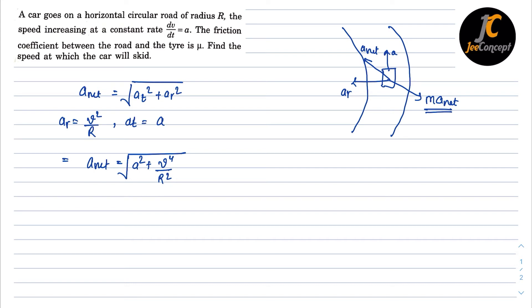Now the required friction to move this car along the circular path is m times a_net should be less than equal to μ times N. So in this case N is nothing but m into g. So putting that value this will become m times under root a² plus v⁴ upon R² less than equal to μ times m into g. The m will cancel out and squaring both sides we will get a² plus v⁴ upon R² less than equal to μ² g².